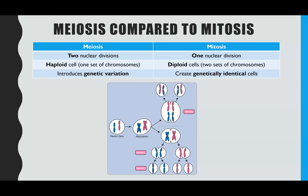To summarise meiosis compared to mitosis: meiosis involves two nuclear divisions whereas mitosis involves only one. Because of two divisions, meiosis produces haploid cells — one set of chromosomes — whereas mitosis produces diploid cells — two sets. Meiosis introduces genetic variation through independent segregation and crossing over, whereas mitosis results in genetically identical cells, or clones. Note that this summary diagram doesn't show the impact of crossing over, as all cells still show the same allele combinations.